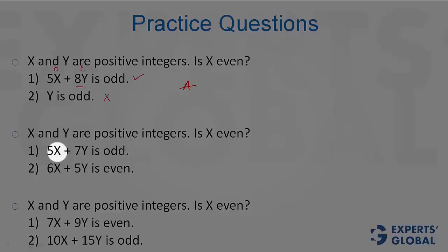Look at the second question here. 5X plus 7Y is odd. That means either the first term is even and the second term is odd, or the first term is odd and the second term is even. But definitely, one is even and the other is odd. Not sufficient.